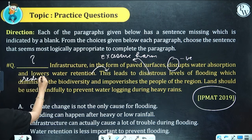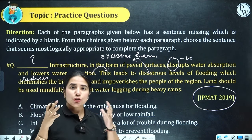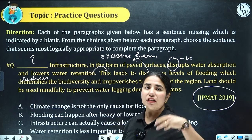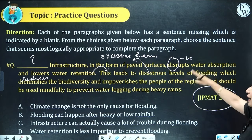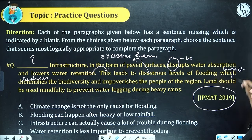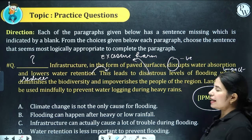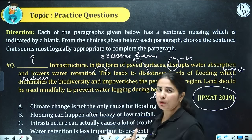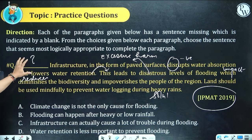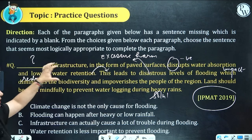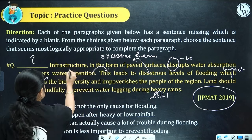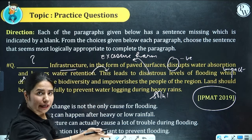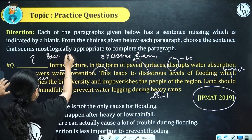The flooding diminishes biodiversity and impoverishes the people of the region. If there is a flood, flora and fauna are impacted, biodiversity reduces, and people get affected. So that is the problem and its impact. Then: land should be used mindfully to prevent waterlogging during heavy rains. So the author presents a problem, discusses its impact, and then offers a possible solution. We need to insert a statement that provides a background or base to this discussion.